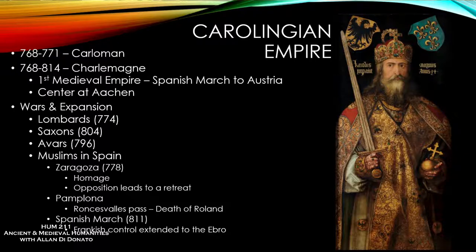Charles agreed and moved his armies into Spain in 778, crossing the Pyrenees in multiple directions with several armies, converging on Zaragoza. But there was a change of government in the city, which refused to submit and was besieged by Charles — ultimately a failed attempt. He left Spain with very little accomplished. On his way out, he did conquer the region of Pamplona, occupied by a group known as the Basques.